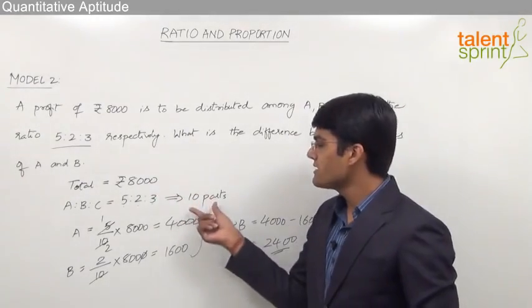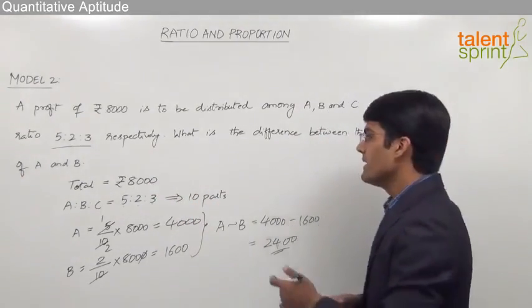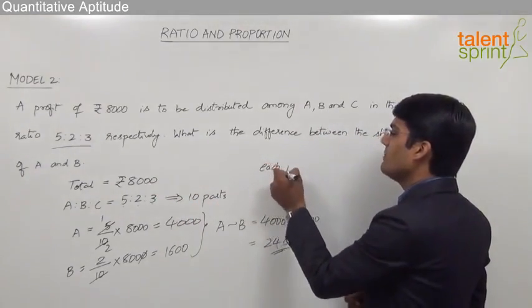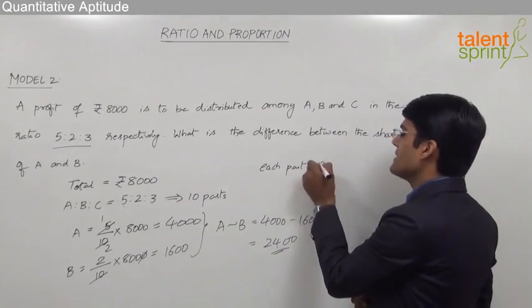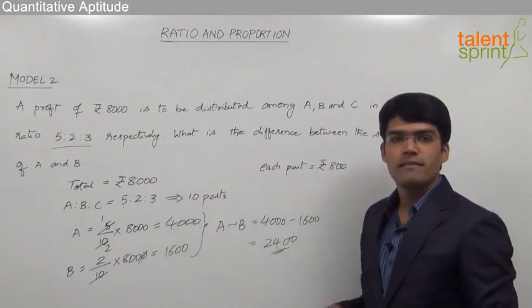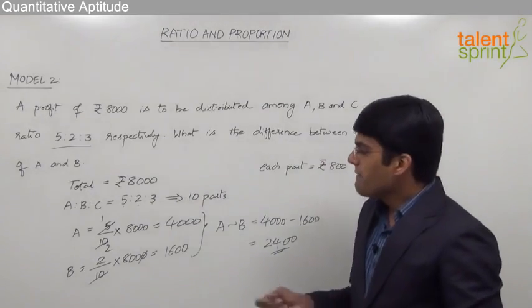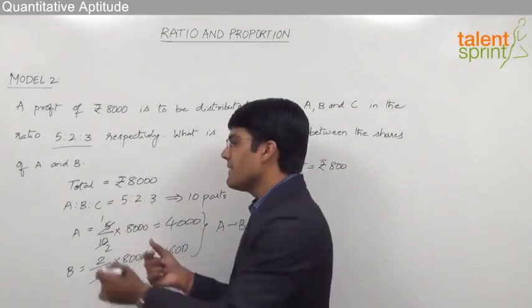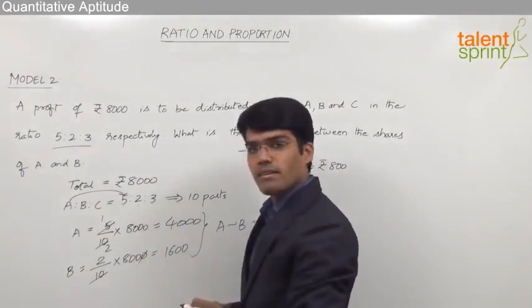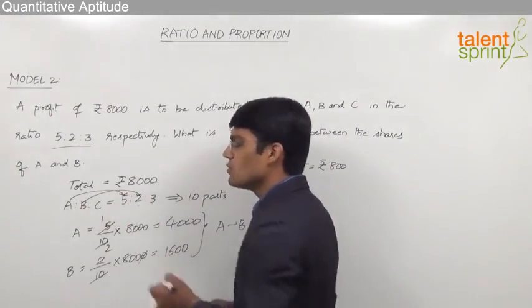When 8000 is divided into 10 equal parts we can say that each part will be equal to 800 rupees because 8000 divided by 10 equals 800. From the ratio we know that A will get 5 parts whereas B gets only 2 parts.